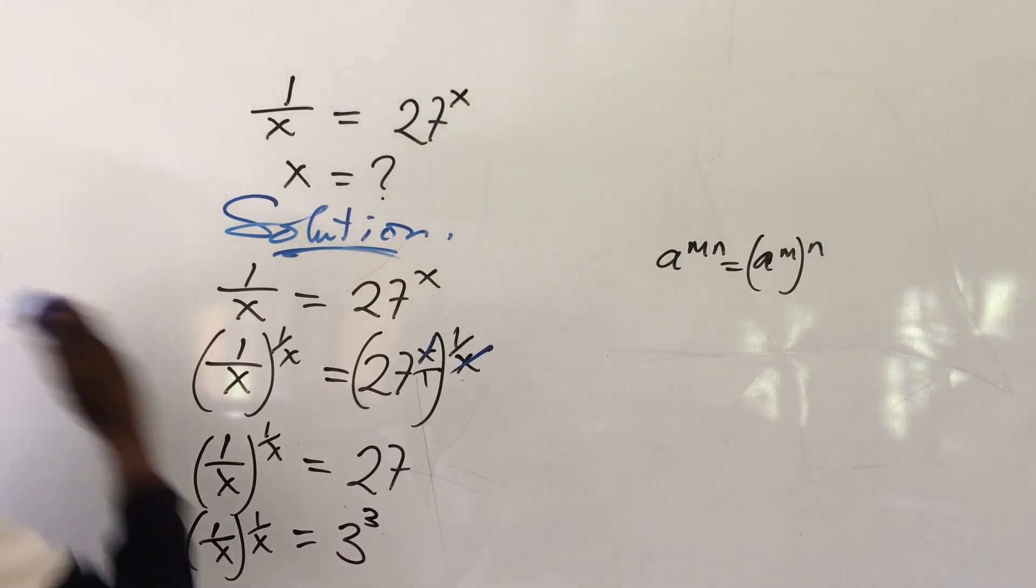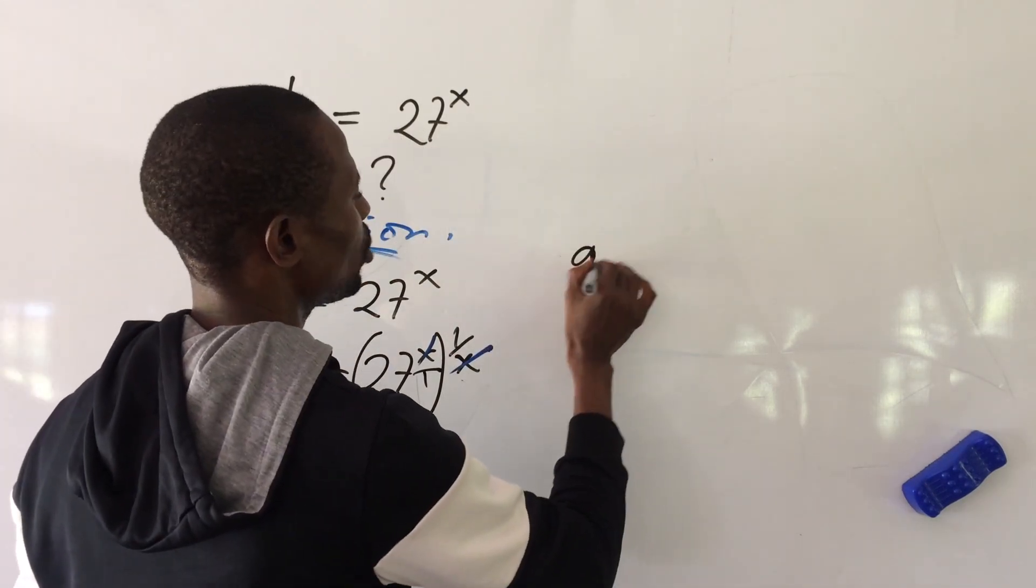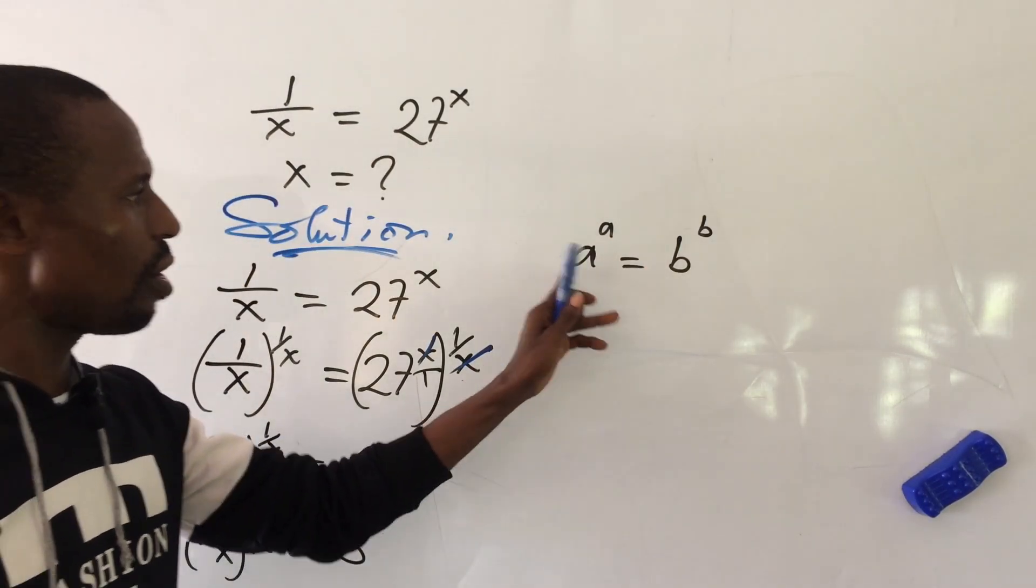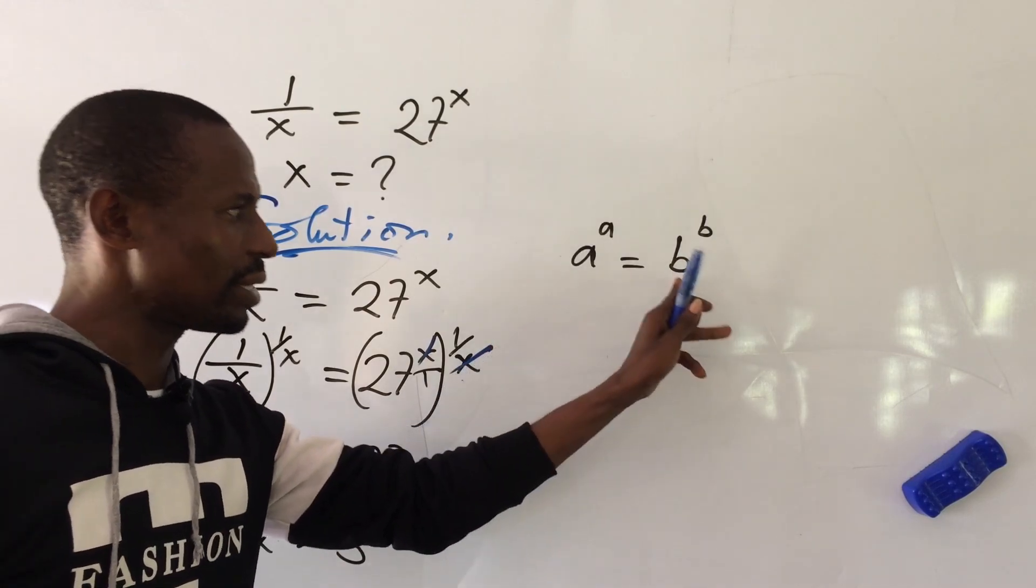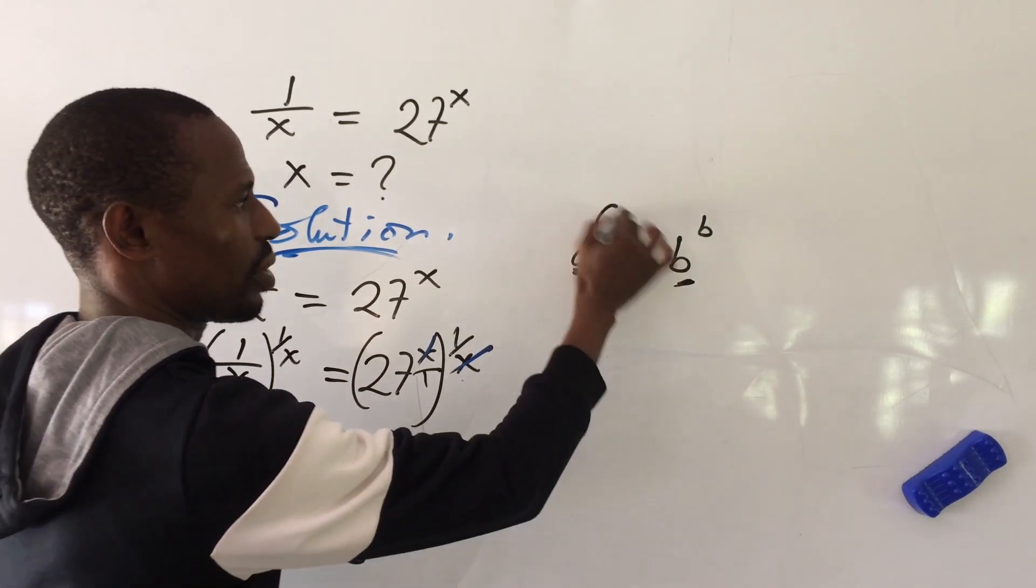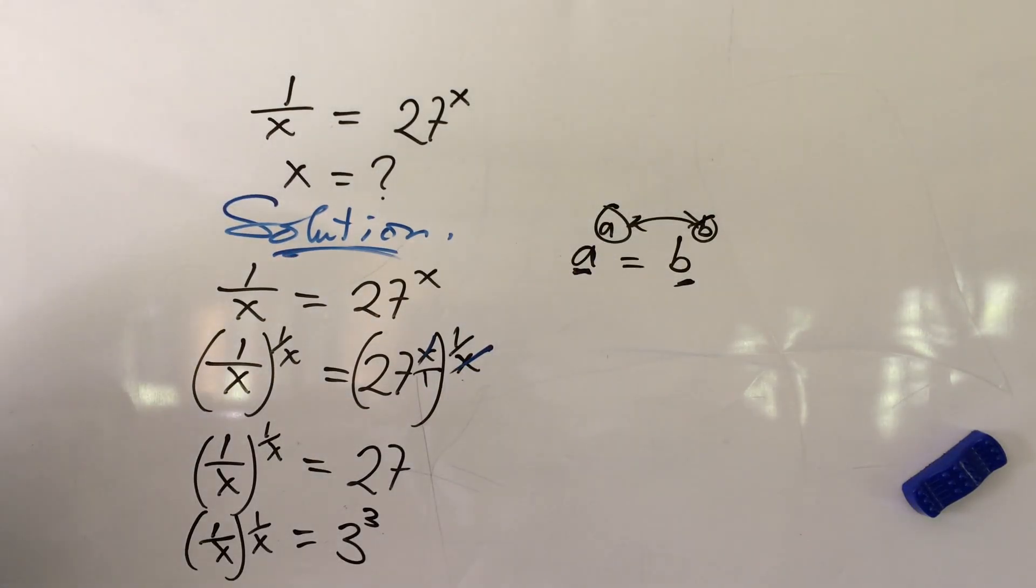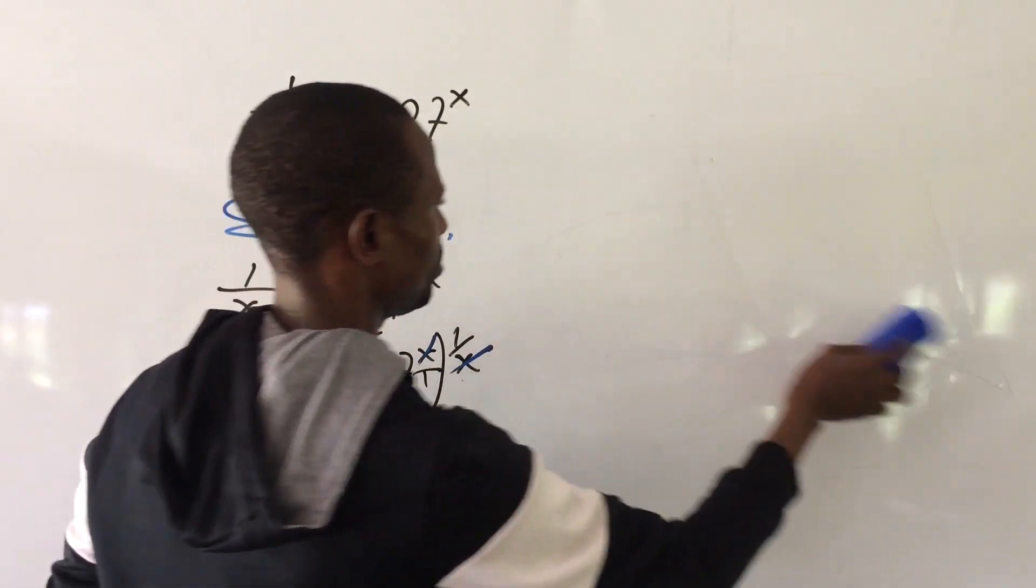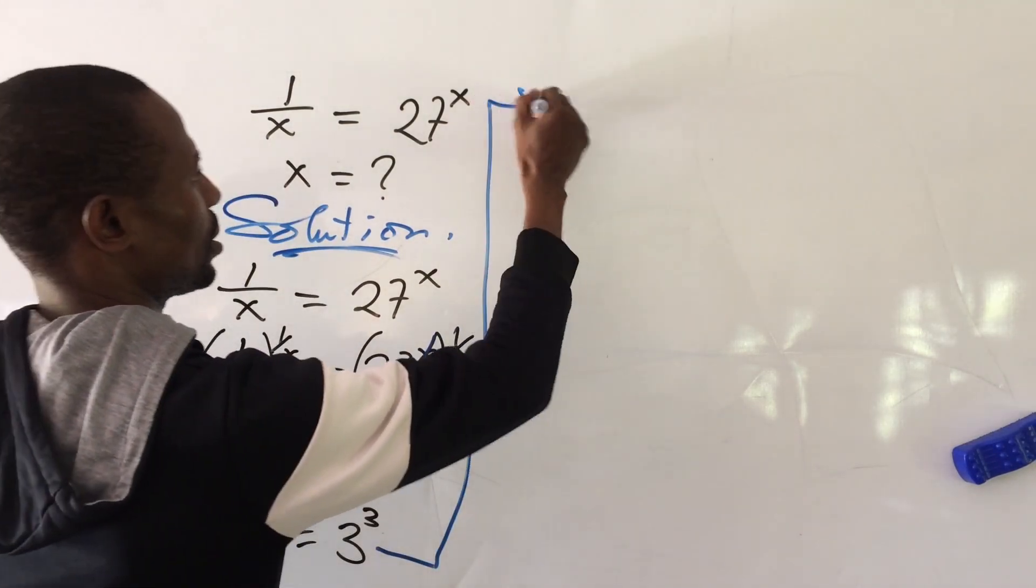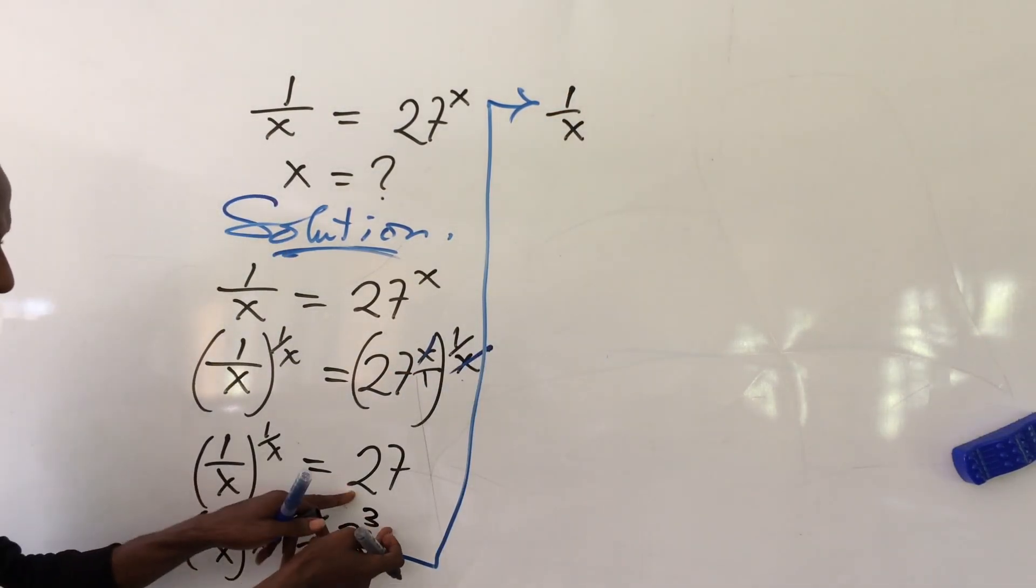Now according to the law which says that if you have e to the power of e equal to b to the power of b, the law says that so long this number is raised to itself on this other side of the equation and this is also raised to itself, then the base will be equal and at the same time you can equate the exponent too. So if we go by that we're going to have 1 all over x equal to 3.